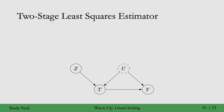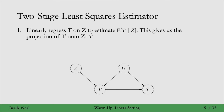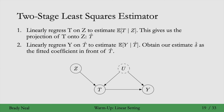The two-stage least squares estimator has two stages. The first is that we linearly regress t on z to estimate the conditional expectation of t given z. This gives us a projection of t onto z, which we'll label as t hat. It's the best predictions in the mean squared error sense that we can get for t given that we're using z as input. Then we'll use that t hat in the second stage, where we linearly regress y on t hat to estimate the conditional expectation of y given t hat. Our estimate for delta will be the fitted coefficient in front of t hat in that linear regression.